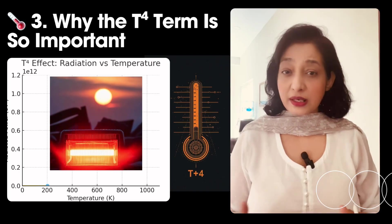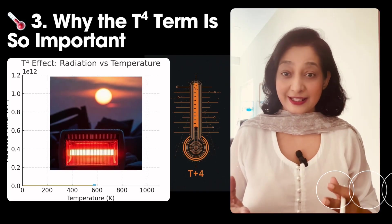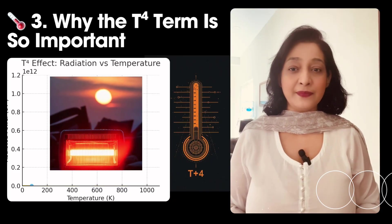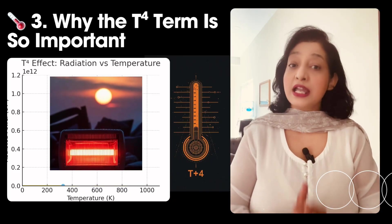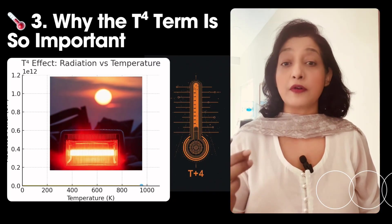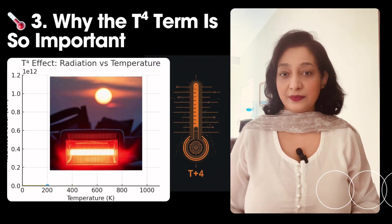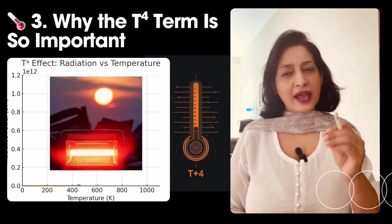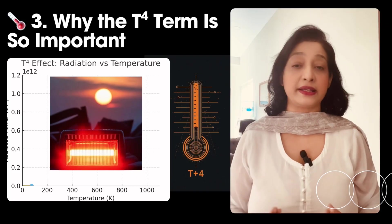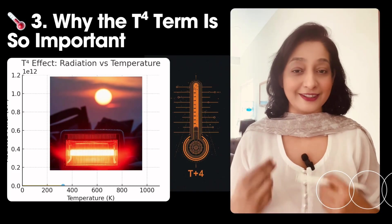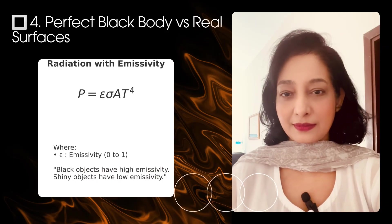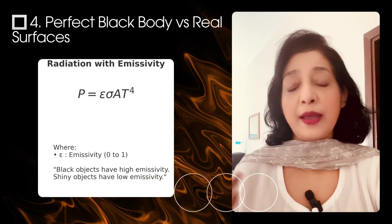The most striking feature is the exponent — temperature to the power of 4. This means even a small increase in temperature produces a huge increase in radiated energy. For example, if temperature doubles, radiation increases by 2 raised to the power of 4, that is 16 times. This explains why the Sun radiates so intensely and why electric heaters glow brightly at high temperatures.